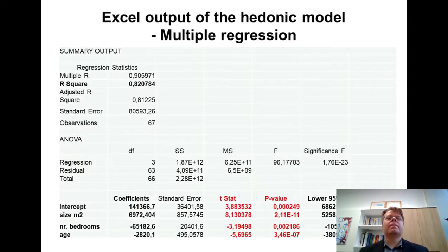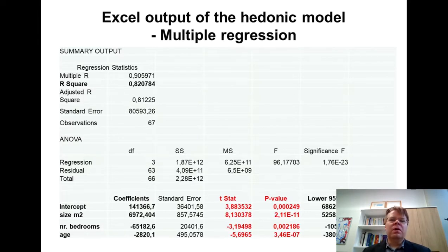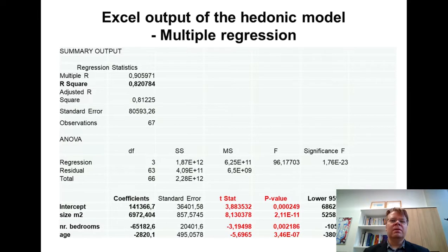One not-so-convenient feature of the t-statistic, which is part of the usual regression output — like in this hedonic model of the housing market example — is that Excel doesn't really produce the critical value that you need to compare to. You need another source, some statistical table or Excel, to find this critical value of the t-statistic. The p-value that is also reported next to the t-statistic — which is also often the case in statistical software other than Excel — can be directly used to test hypotheses.